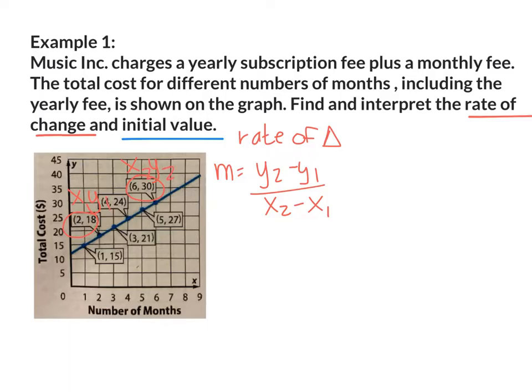So it's going to be 30 minus 18 all over 6 minus 2. 30 minus 18 is 12. 6 minus 2 is 4. 12 divided by 4 is 3. So it's going to be $3 per month. And that is my rate of change.